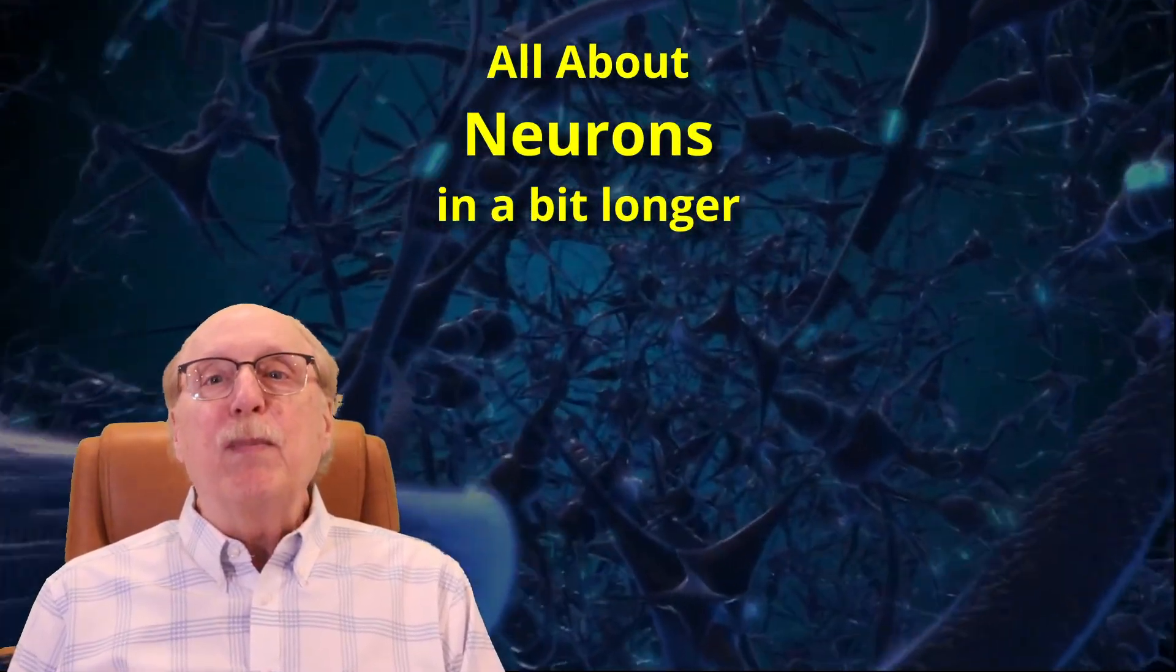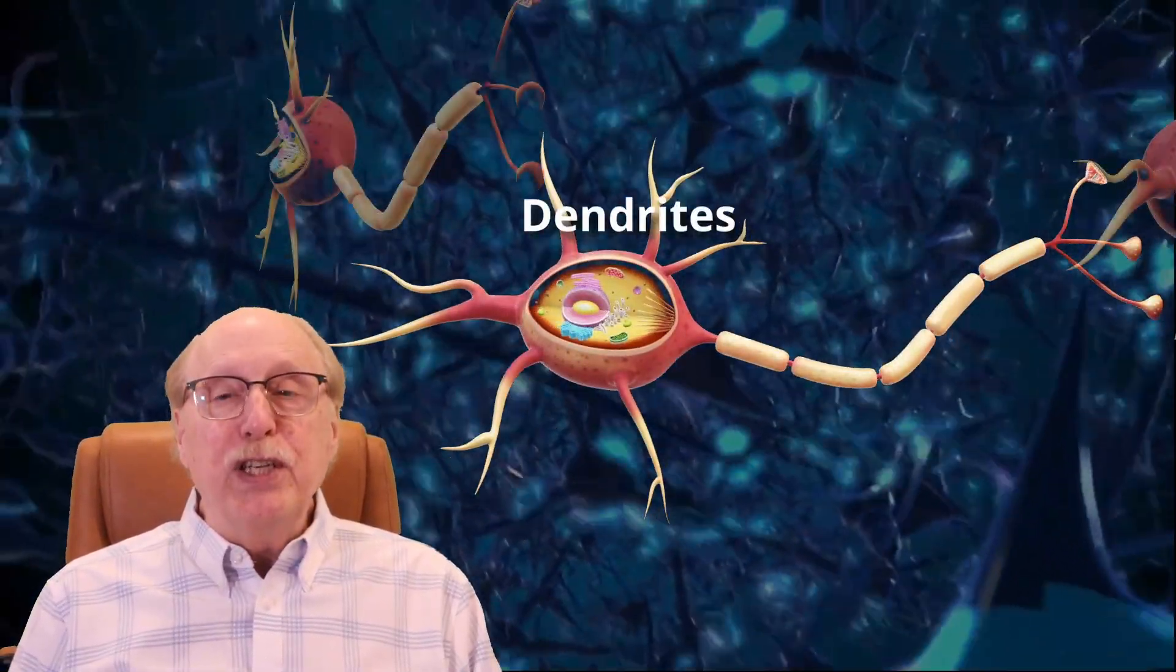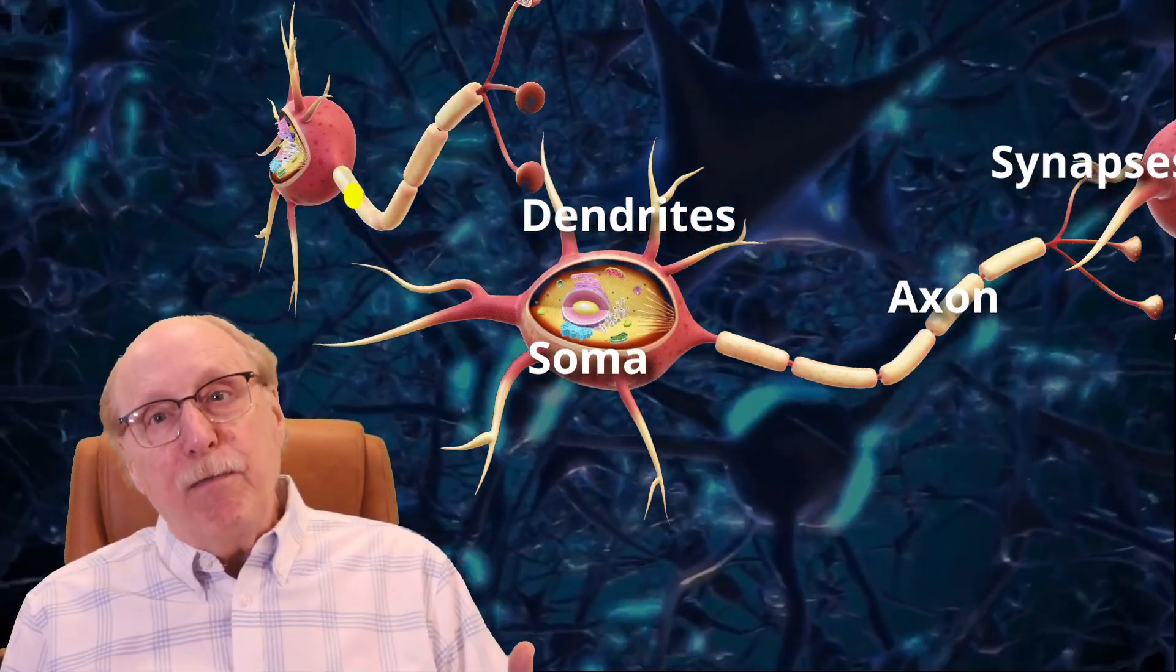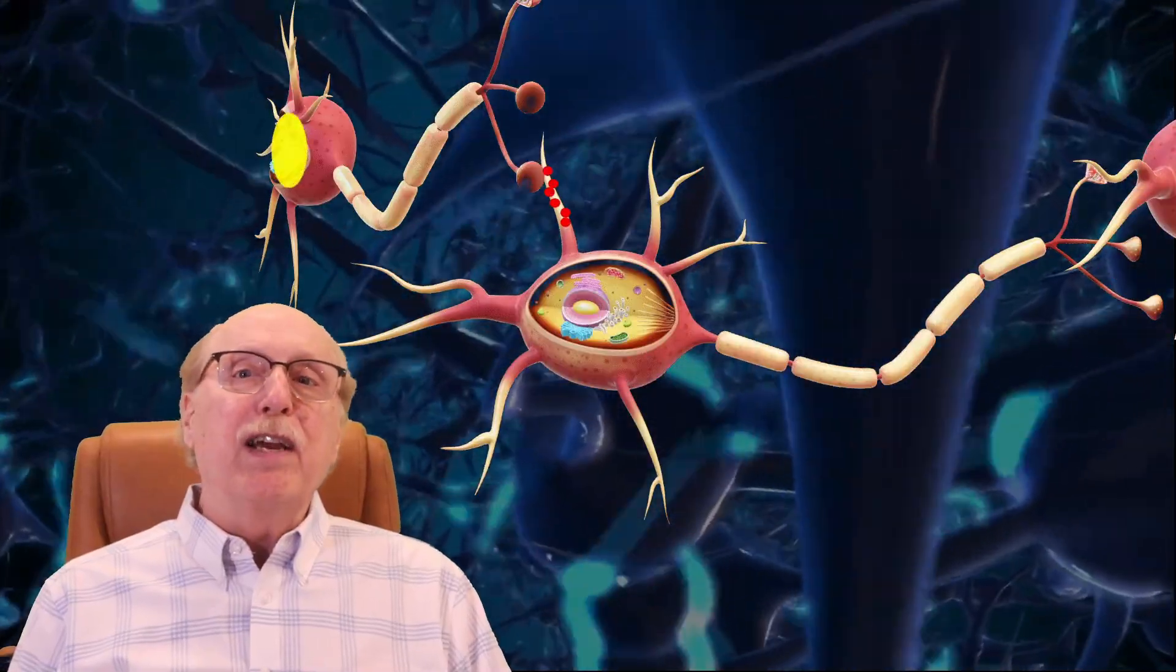Now switching to biology, the neuron receives inputs from other neurons through its branching dendrites. While digital gates will typically have a few inputs, neurons can have thousands.